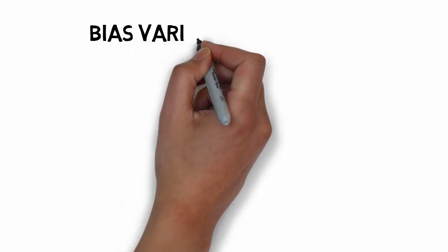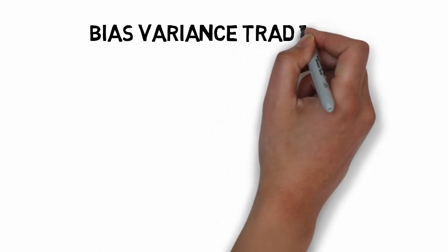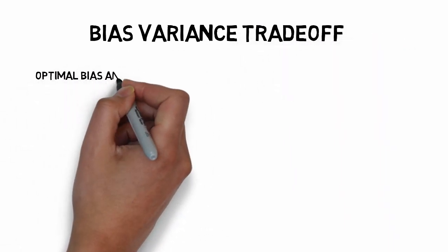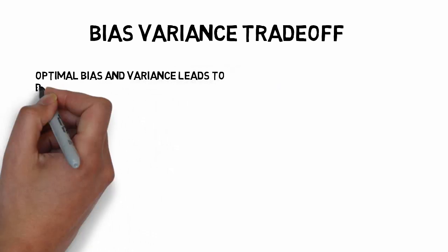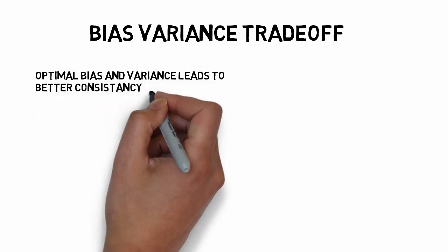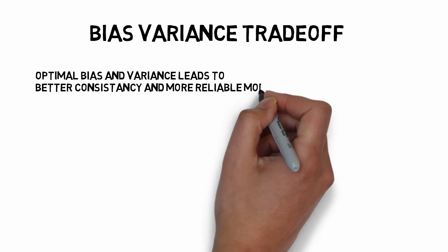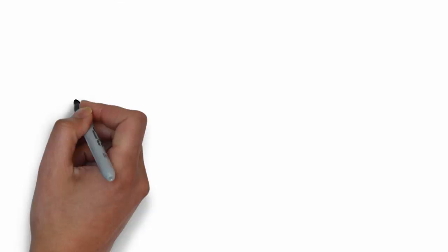So bias-variance trade-off is trying to get an optimal bias and variance for the model. When we try to increase bias, the variance decreases. And when we try to increase variance, the bias decreases. So getting an optimal bias and variance is a task.